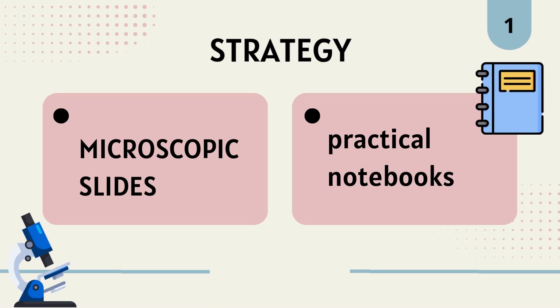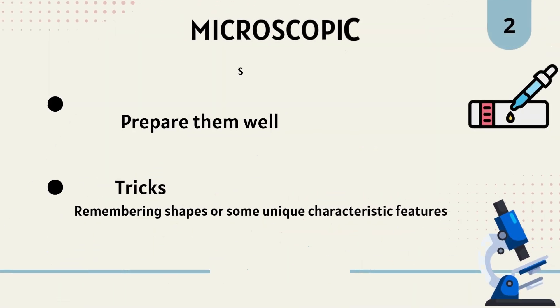For microscopic slides, prepare them well. The trick is remembering shapes or some unique characteristic features. Questions came in centralized OSPI from these slides. Most of the time colleges keep their own slides, so you practice in internal exams. If you can't identify the slide directly, remember the shape. For example, in my time the liver had a triangular shape, so I easily identified it in my internal exam.